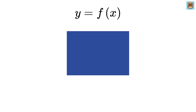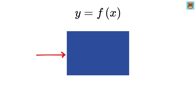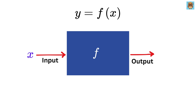For a moment, think of a function y equals f of x, like this machine where you put something in — which we also call an input, or x. The machine is like the function f, which does its work, and it gives you something out of it, also known as the output, or y.